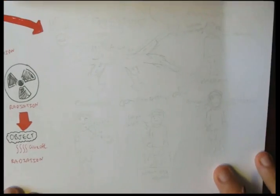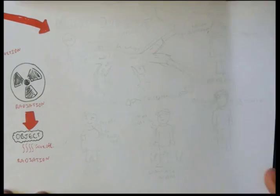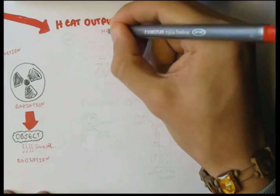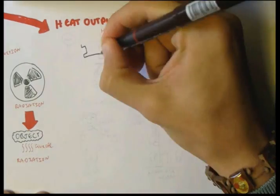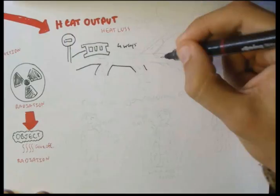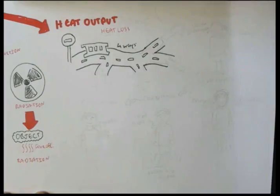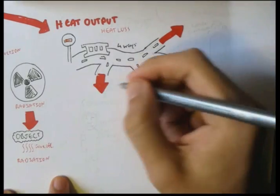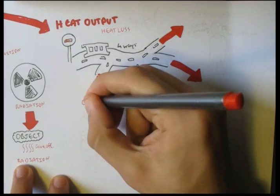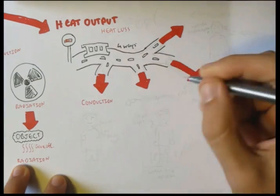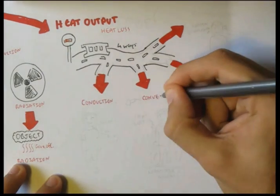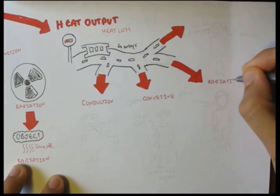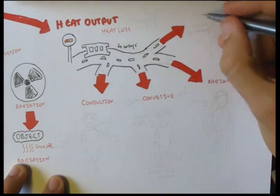On the other side of the scale, heat output, or heat loss from the body, comes in four ways: conduction, convective process, radiation, and evaporation.